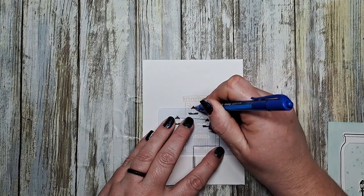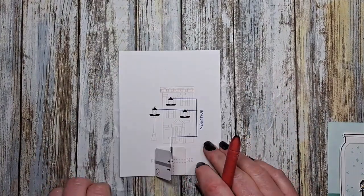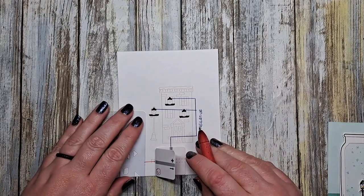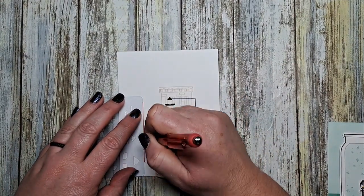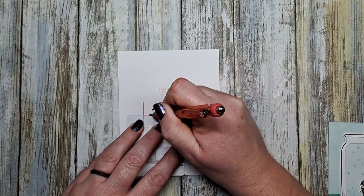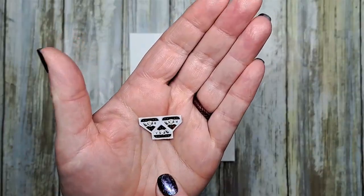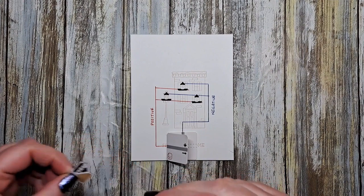Next we're going to map out the positive side of our circuit which comes off the flap of our battery holder. We're going to continue that up and across all three of the fatter parts of our stickers and that completes our circuit today.